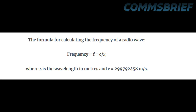The mathematical formula is f equals c divided by lambda, where f is the frequency, c is the speed of light, and lambda is the wavelength. You can use this formula to calculate frequency if you know the wavelength, and you can calculate the wavelength if you know the frequency.